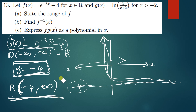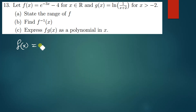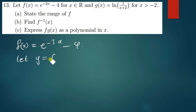All right, there are still more questions remaining. We move on to finding the inverse of f of x. So we have f of x equal to e to the power negative 3x minus 4. To find the inverse, we let y equal to f of x, meaning we put y in place of f of x: y equals e to the power negative 3x minus 4.